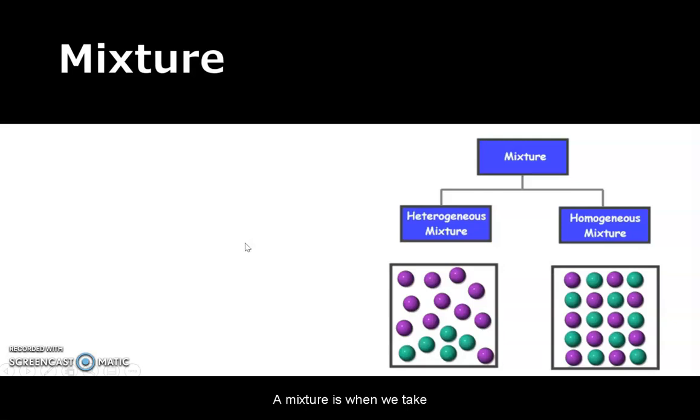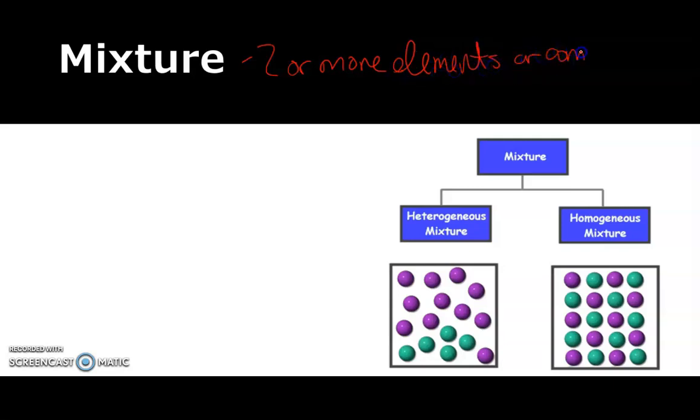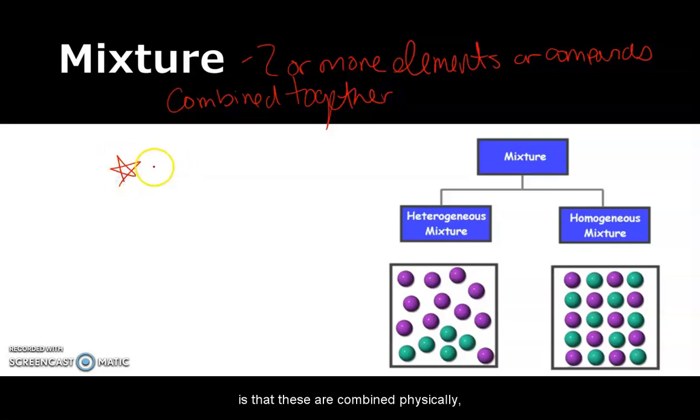So a mixture is when we take two or more of those elements or compounds and combine them. Two or more elements or compounds combined together. And the key here is that these are combined physically, not chemically.